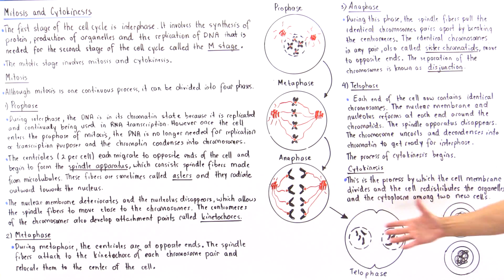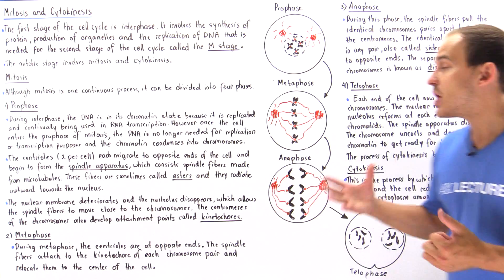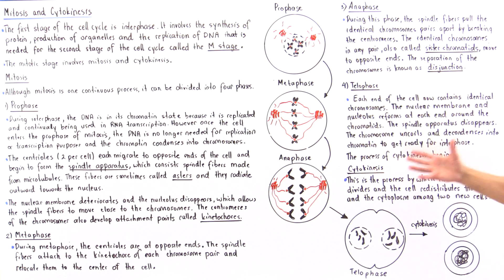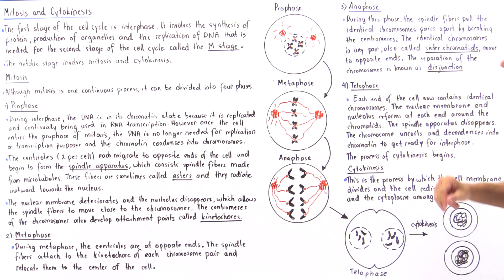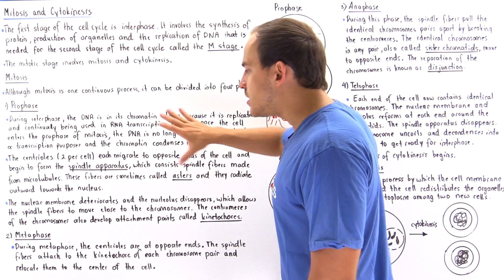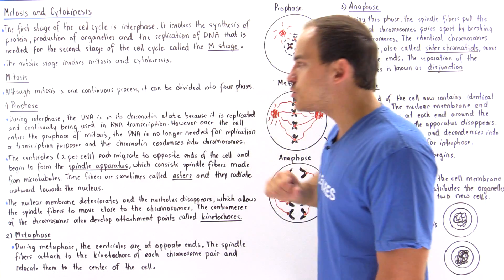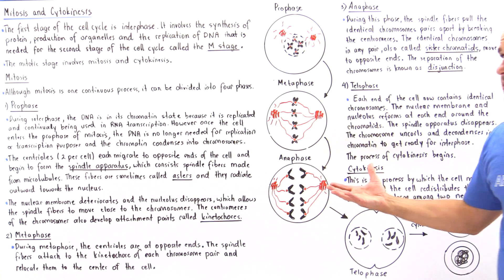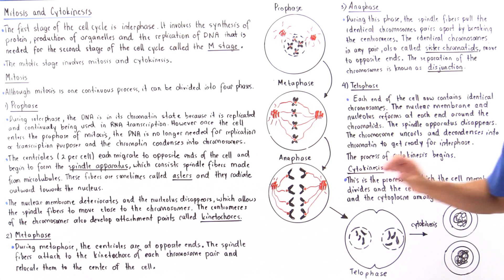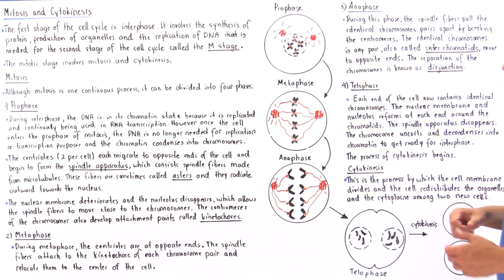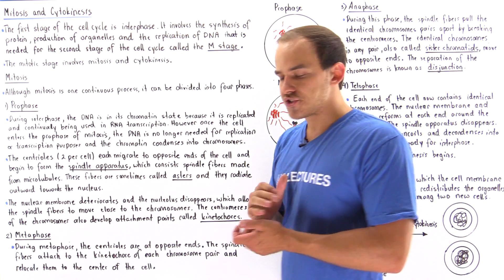Cytokinesis actually begins in the phase of mitosis known as telophase. So let's go through each one of these individual phases of mitosis and describe what takes place in each one, beginning with prophase.